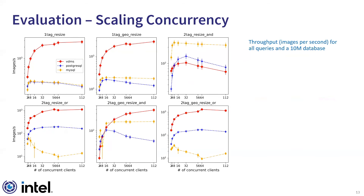Next, we evaluate the throughput of each system for all queries using the 10 million database as the number of concurrent clients grows. VDMS consistently outperforms each of the baseline systems for Query 1, Query 2, Query 4, and Query 6 as concurrency grows. VDMS throughput continues to significantly increase up to 56 concurrent clients — which is the hardware concurrency of the system — for all queries except Query 3.